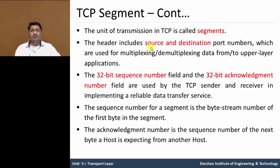The header includes source and destination port, as we saw in the application layer. The source and destination port numbers are used in multiplexing and demultiplexing from upper layer applications. The 32-bit sequence number field and 32-bit acknowledgement field are used by TCP sender and receiver for implementing reliable data transfer services.